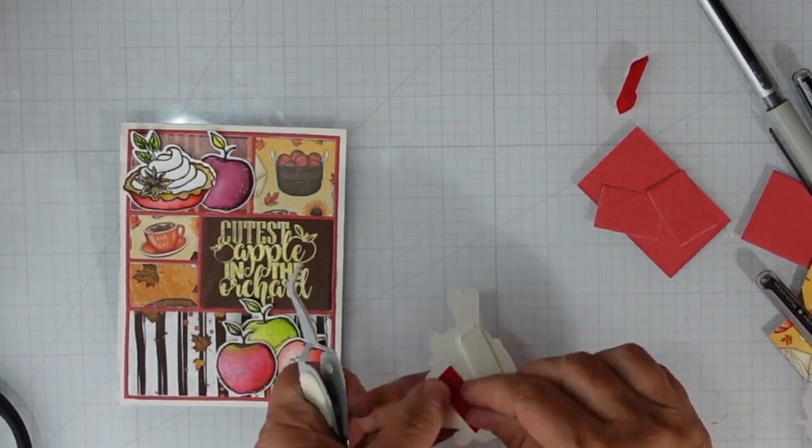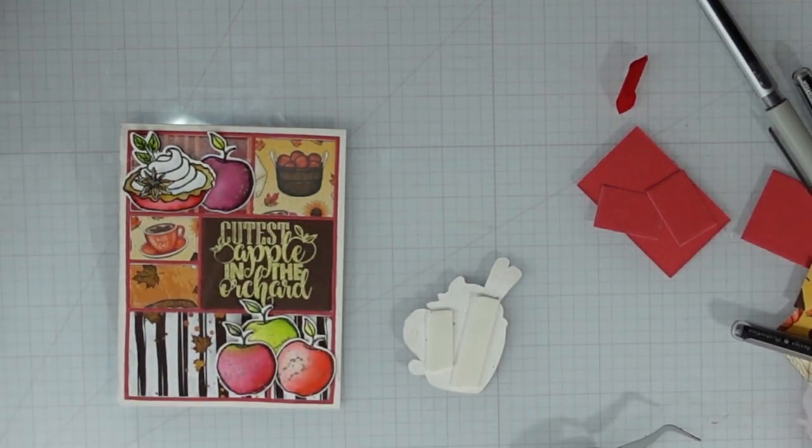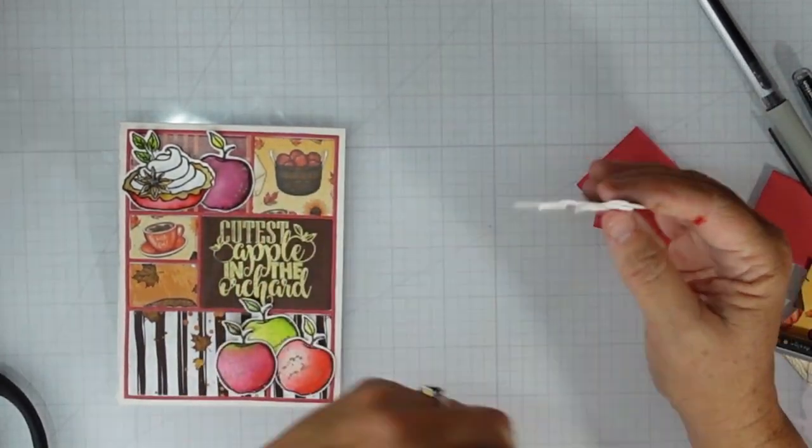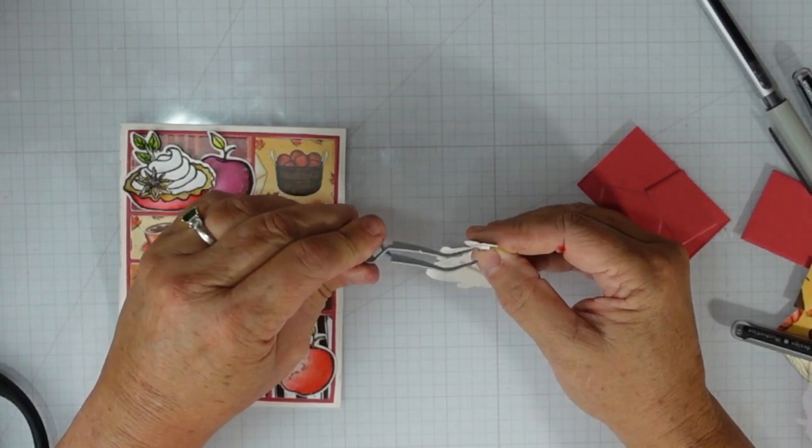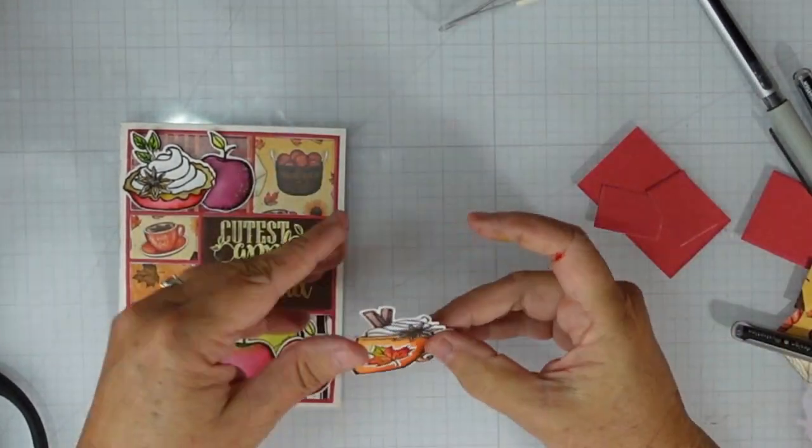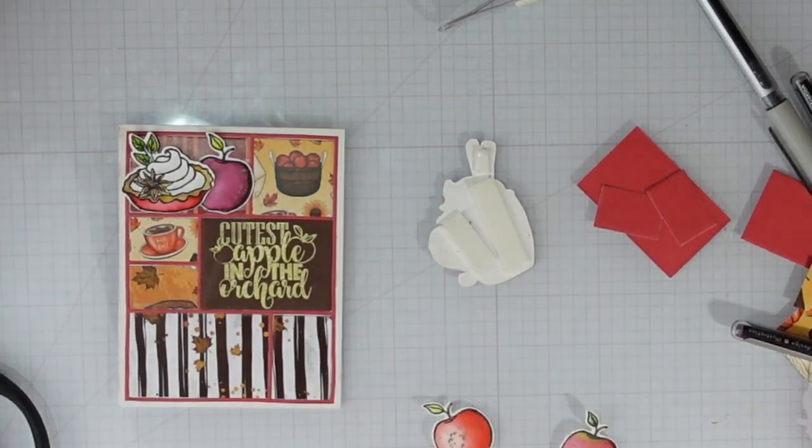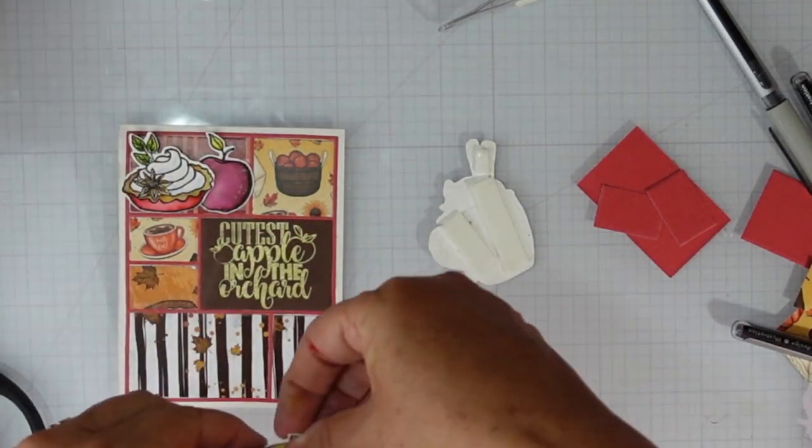For those little flowers that are on the pie and that are also on this apple cider mug, I used something called cinnamon, which really didn't look like cinnamon color. I had to blend it with some of the sepia and some of the brown to get it to wash out. It had kind of a green tone which was a little bit strange.